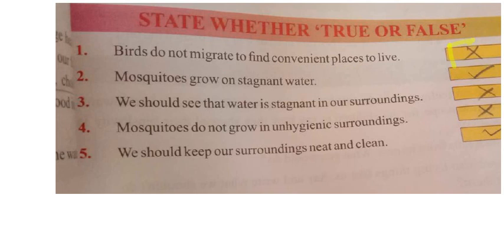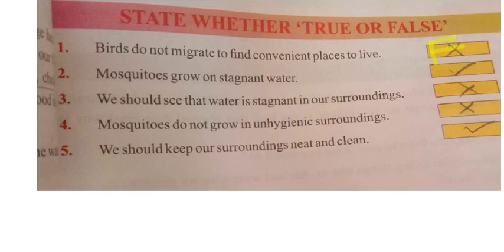Moving to the second question: Mosquitoes grow on stagnant water. Stagnant means still, unmoving water. Mosquitoes will grow on stagnant water, so this is True. The second answer is True.